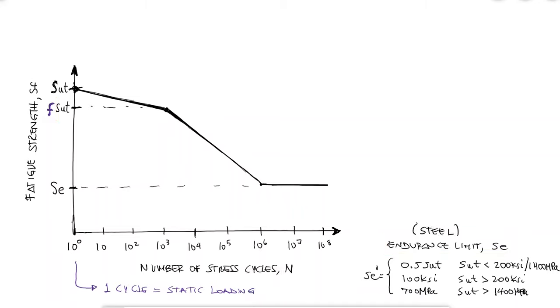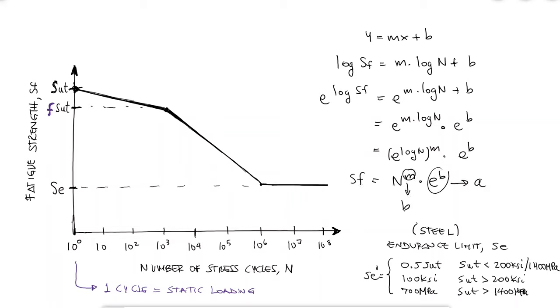One of the most important capabilities from this idealized and conservative diagram is being able to relate fatigue strength to number of cycles, especially for the high cycle region. Since this region is represented as a straight line in a log-log scale, we know that SF is equal to A times N to the B, just like we did on our previous video of crack propagation.